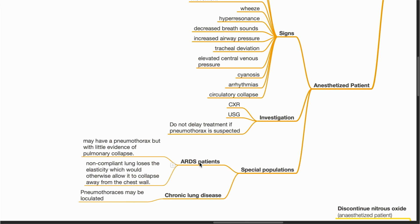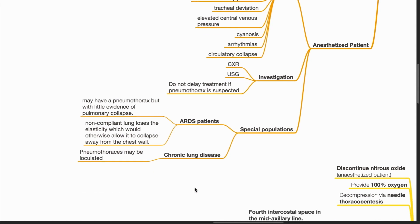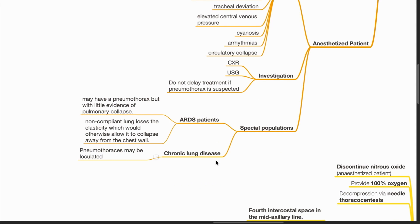In ARDS patients, they may have a pneumothorax but with little evidence of pulmonary collapse because the non-compliant lung loses the elasticity which would otherwise allow it to collapse away from the chest wall. In patients with chronic lung diseases, pneumothorax may be loculated.